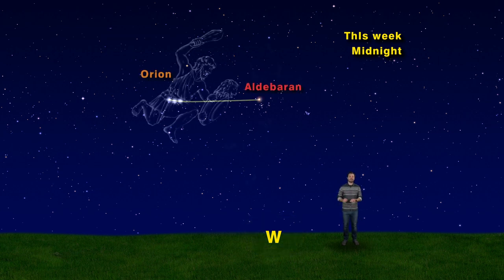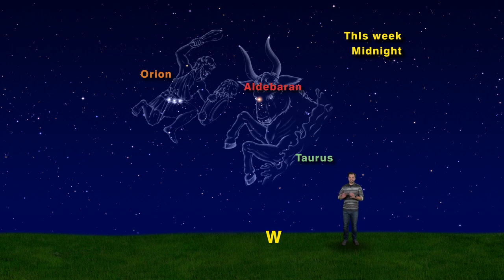Follow his belt stars to the right to Aldebaran, the eye of Taurus the bull. His others are Elnath and Alcyone in the Pleiades.